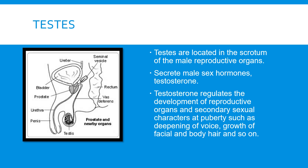Next comes the testes. The testes are the male reproductive organs and they secrete the male hormone testosterone. They are located in the scrotum of the male reproductive system. Testosterone regulates the development of the reproductive organs and the secondary sexual characters at puberty, such as deepening of the voice, growth of facial hair and body hair, and so on.